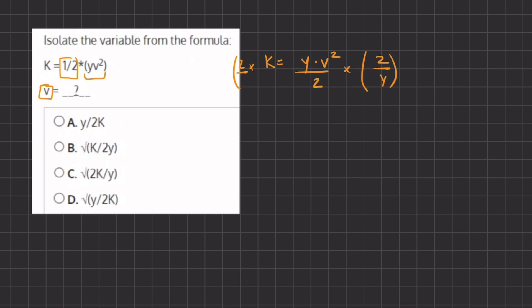On the left hand side we have k times 2 all over y, and on the right hand side the y's are going to cancel and the twos are also going to cancel. Therefore we are only left with v squared.